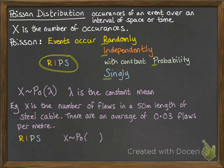Now the lambda parameter is the constant mean. And we're looking at a length of 50 meters. We know that you get 0.03 flaws per meter. So we need to multiply that up for 50 meters. And if you do 50 times 0.03, you get 15. So x follows a Poisson distribution with mean of 15.